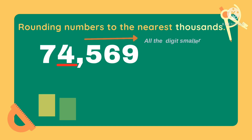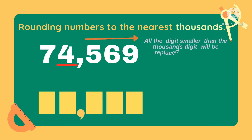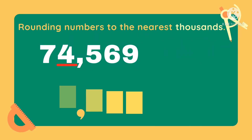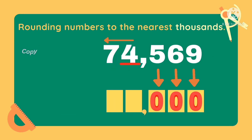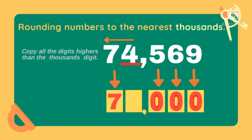Let's underline the number to show that 4 is the digit we need to round off. Then, all the digits smaller than the thousands digit will be replaced with 0. Those are the digits to the right of 4. So 9 will become 0, 6 will become 0, and 5 will become 0. Then copy the digits to the left of the digit to be rounded. In this example, the digit to the left of 4 is 7. We will just copy 7.